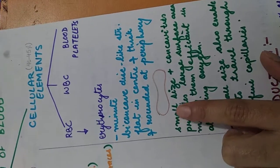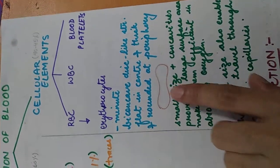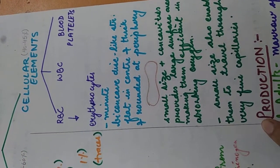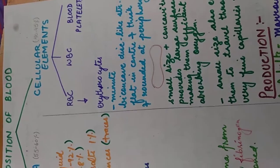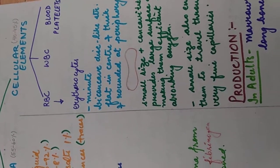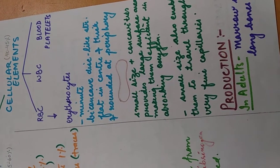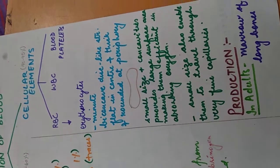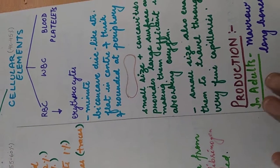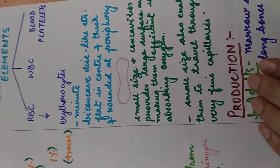They are biconcave, means this side is curved inside and this side is curved inside. The periphery is rounded and thick. This small size plus these concavities provide a large surface area which makes these RBCs more efficient for absorbing oxygen.